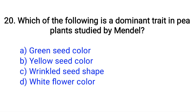Question number 20. Which of the following is a dominant trait in pea plants studied by Mendel? Option A: Green seed color, B: Yellow seed color, C: Wrinkled seed shape, D: White flower color. The right answer is Option B: Yellow seed color.